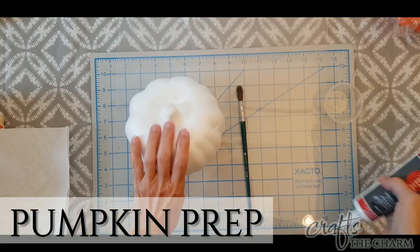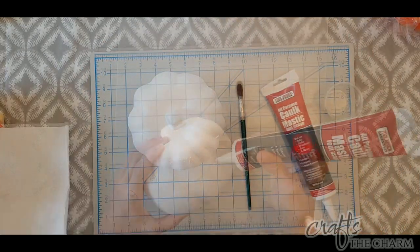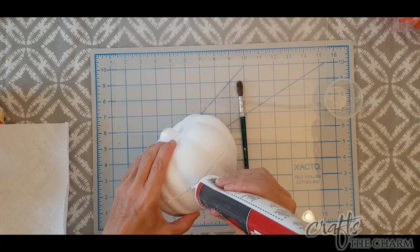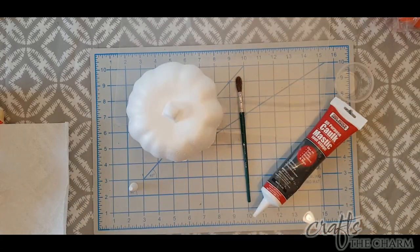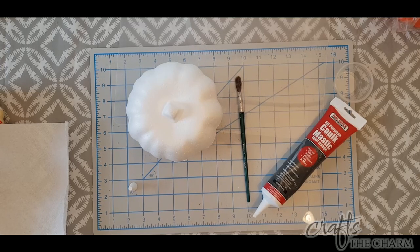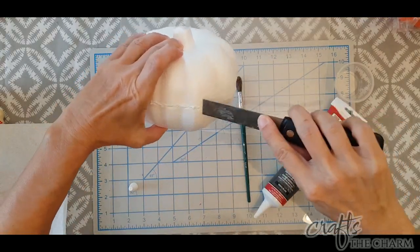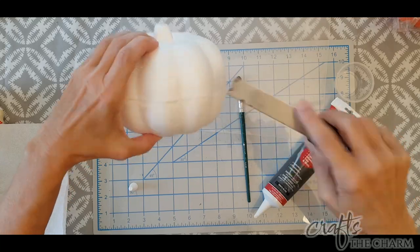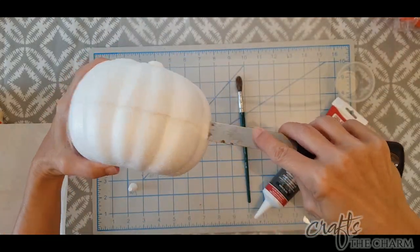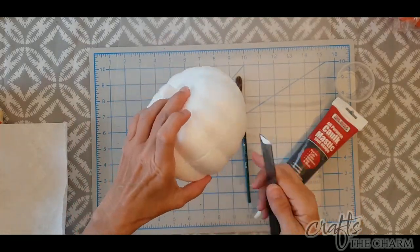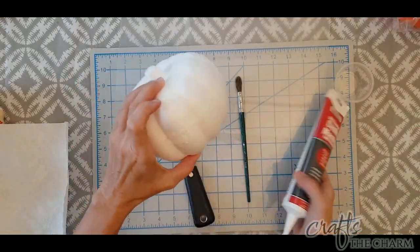To start we're going to use one of these foam carvable pumpkins from the Dollar Tree. This one that I'm using is white but you don't have to use a white one. This year they come in white, orange, and black. The white is going to be easiest though because we are going to paint it an off-white. Now these are two pieces that are joined together in the middle so it does have this sort of unsightly seam in the middle and I thought I would try to caulk that.